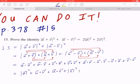And in the second half, it's the exact same idea. This is going to be the magnitude of u squared minus u dotted to v minus u dotted to v plus the magnitude of v squared.